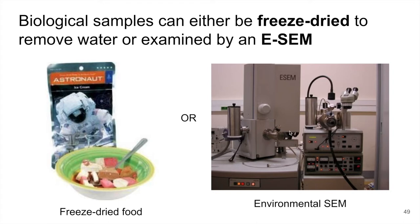The other approach is a specialized version of the SEM called Environmental SEM, or E-SEM, where we can examine samples in a higher amount of gas. We can add water to certain regions of the microscope so that we can view materials in more of their native state, with water or with some type of gas pressure.